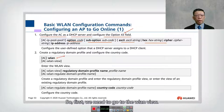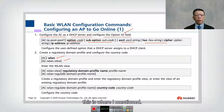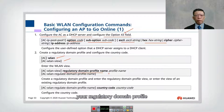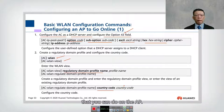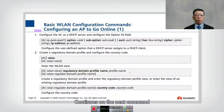First we need to go to the WLAN view. Once inside the view, you need to configure your regulatory domain profile. By default it is set to China, and this defines our country code. These are the few commands you can use on the AP.